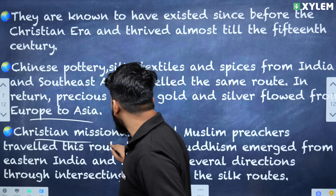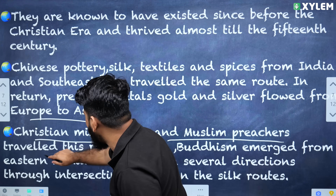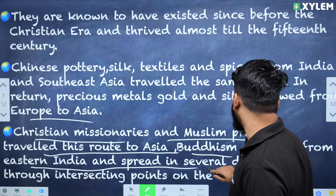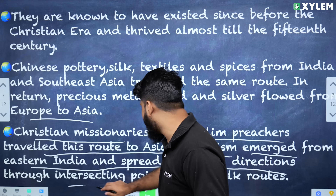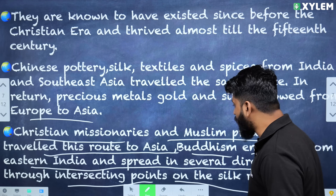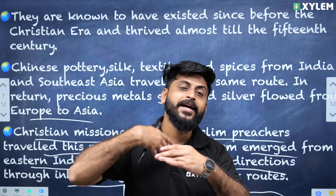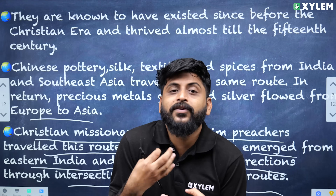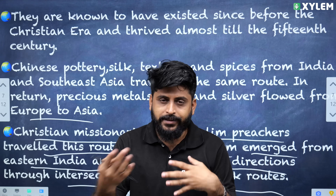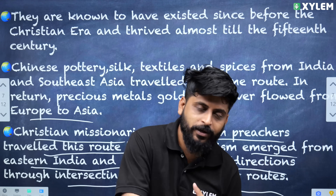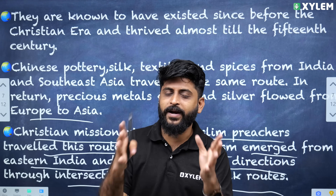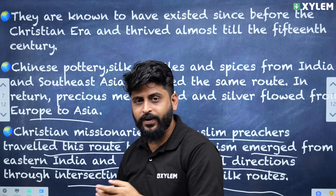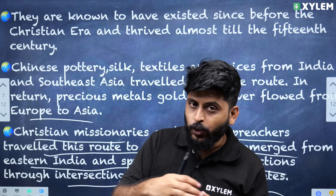Muslim priests and travelers traveled this route to Asia. Buddhism emerged from Eastern India and spread in several directions through the intersecting points of the Silk Route. The Silk Route was not only about trade — cultural exchanges also took place. Different religious views, including Christian, Muslim, and Buddhist ideologies, spread through this route.